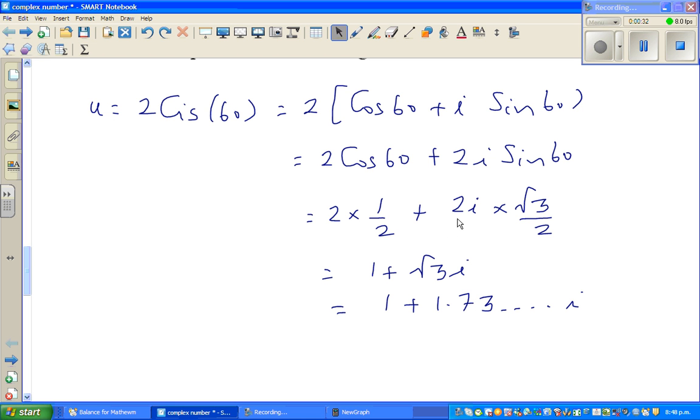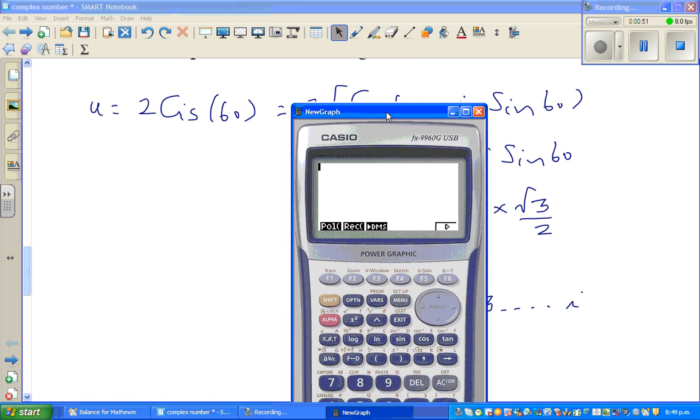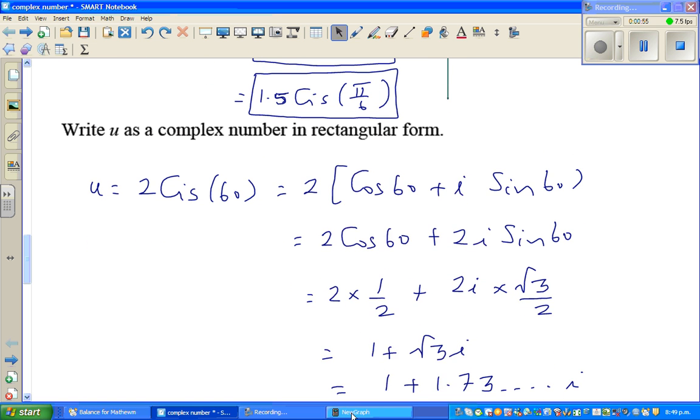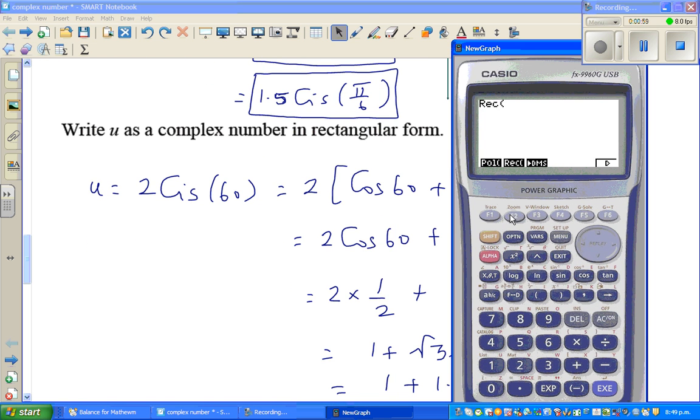But even though the calculator does give you the answer, you should know how the calculator works. That's always my focus. So you go to option, then you press F6, then you press F5, that's angle, and then again F6. Remember, lots of steps. So you want to change this in a rectangular form. That's the question. So again, you have to remember, you have to go rectangular form.